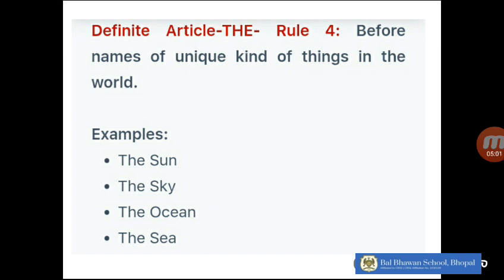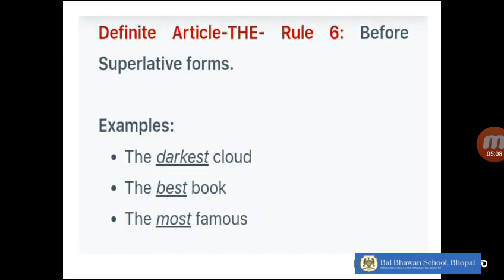The next rule is we use the article 'the' before names of unique things in the world — the sun, the sky, the ocean, the sea. They are one of their kind, so we use 'the' in front of them.